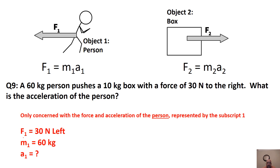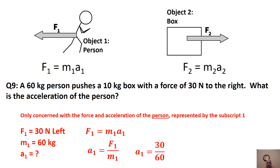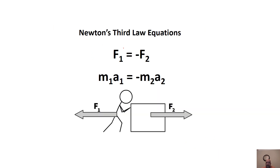Solving for acceleration of the person (subscript 1) using Newton's second law: a = F/m = 30/60 = 0.5 meters per second squared to the left. Both person and box experienced the same 30-newton force, but the person was bigger so the acceleration was less, and it's also reversed in direction.